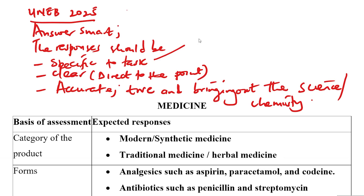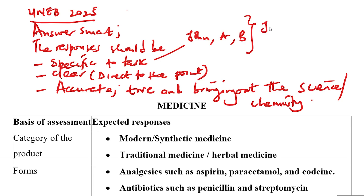Specificity means that the learner should look into the scenario and respond as per the scenario. For example, a scenario can contain a person — maybe John — can contain substance A, product B. So these should appear in the learner's response. For example, the learner can say, 'John used modern antibiotic medicine.'